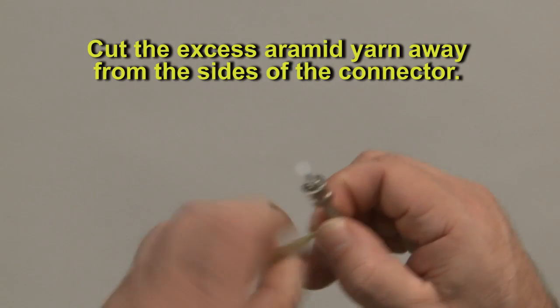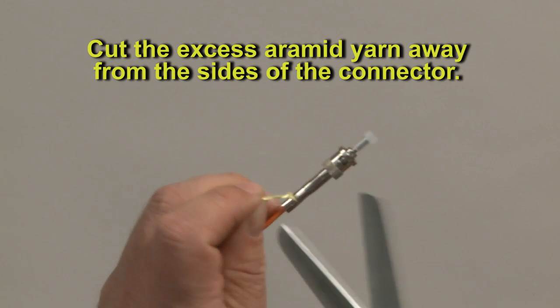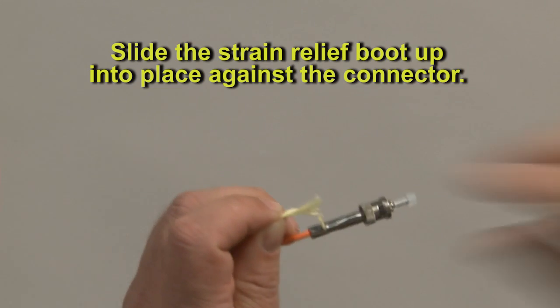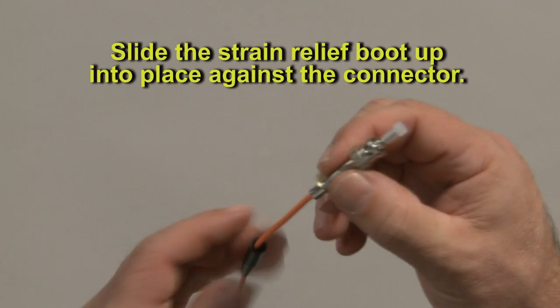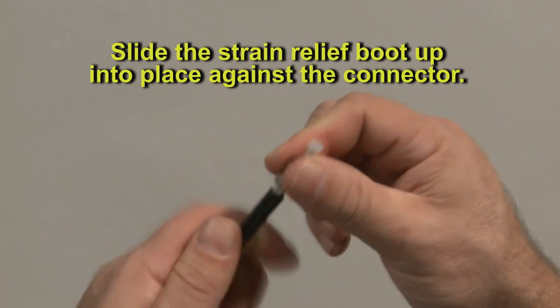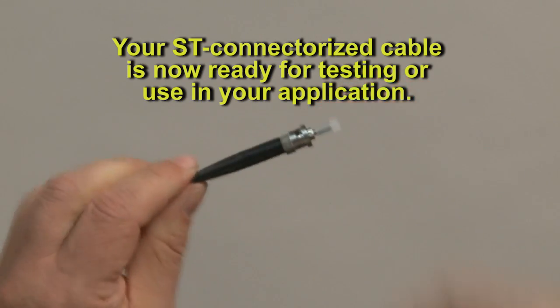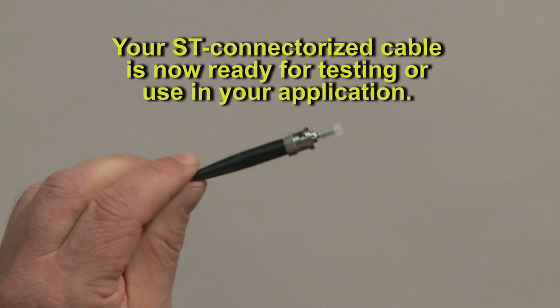Cut the excess aramid yarn away from the sides of the connector. Slide the strain relief boot up into place against the connector. Your ST connectorized cable is now ready for testing or use in your application.